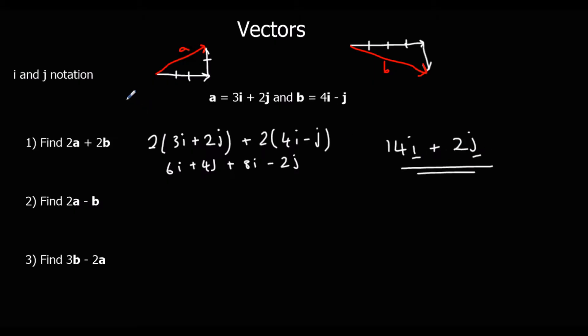So if we went 2a's — did this twice — and b did this twice, in total we would have gone along 14 in the x direction and up 2 in the y direction.